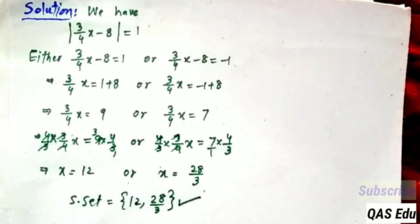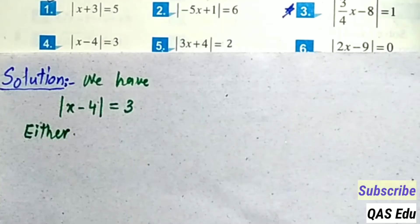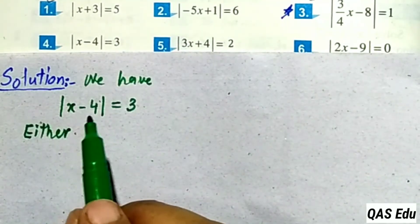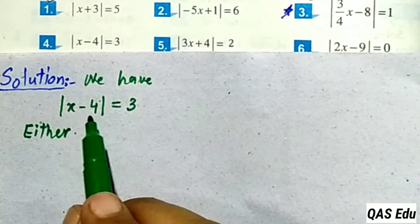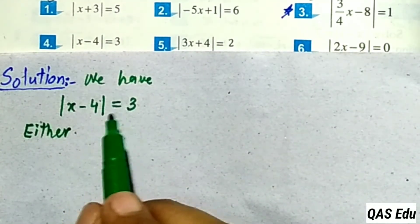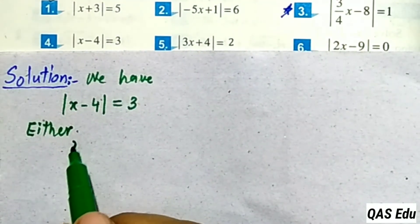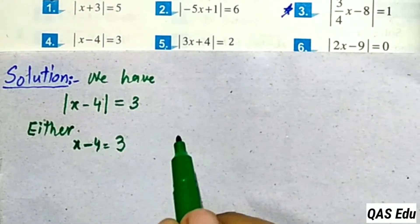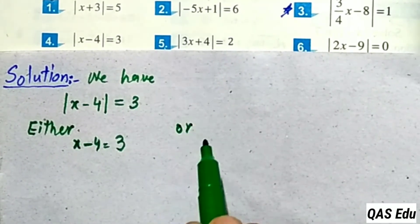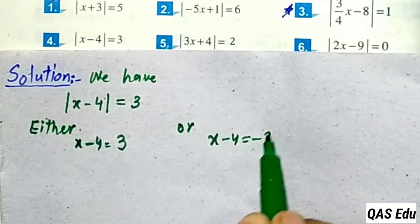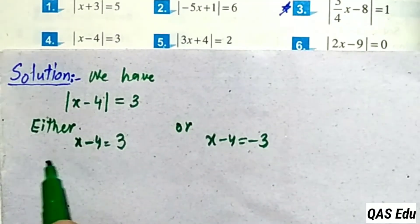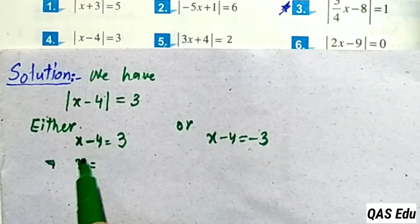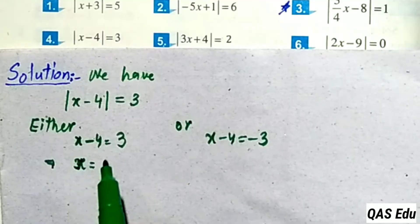This is the solution set for the given absolute value equation. Question 4: absolute value of x minus 4 is equal to 3. Two possibilities: x minus 4 equals plus 3, or x minus 4 equals minus 3.